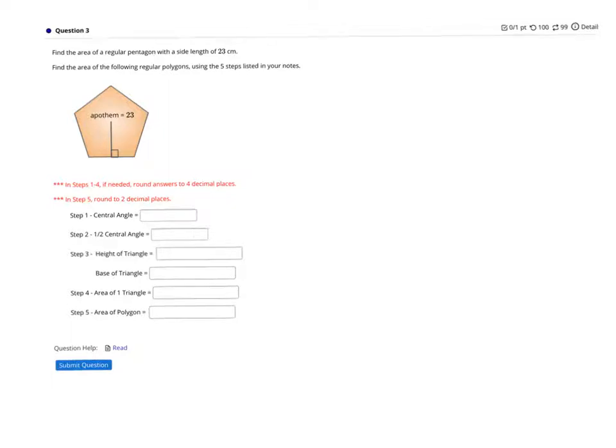This is area of regular polygons number three. We want to find the area of a regular pentagon if we're given the apothem. Let's remember what the apothem is. The apothem is the distance from the center of the polygon perpendicular. So when I draw my triangle, that will give me the height of my triangle.